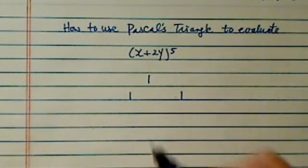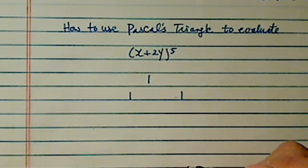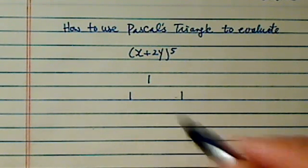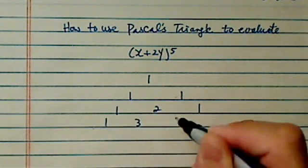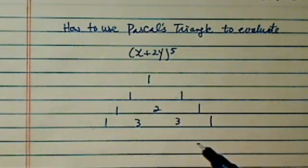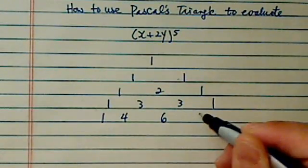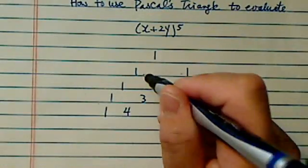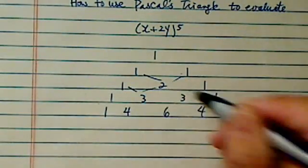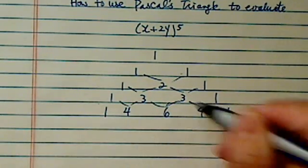Pascal's triangle is the best. It's named after French mathematician Blaise Pascal. It's really a nifty way to figure out expansion without actually doing the hard work. The premise is that you add those two numbers, and those give you the coefficient for that specific term.